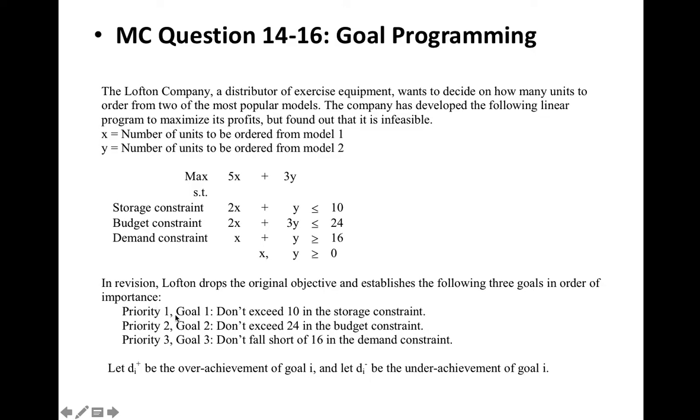The first priority goal is: don't exceed 10 in the storage constraint. The second priority goal is to not exceed 24 in the budget constraint. The next priority goal is to not fall off the 16 in the demand constraint.